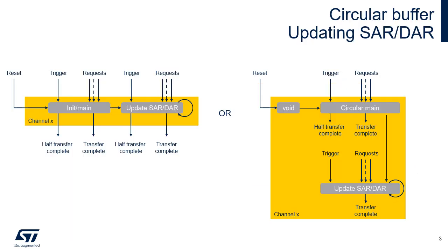This slide describes the automatic update of the source or destination address register when a unique circular buffer is used. As a unique buffer is used, the half-transfer complete interrupt is required to ensure that software has processed the received samples before the DMA overrides them with new ones. The automatic restoration can be performed by two approaches. The first approach, shown in the figure on the left, was described previously: the main LLI 0 configures directly the linked list register of the channel, and only LLI 1 in memory restores the source or destination address and is the only one executed.